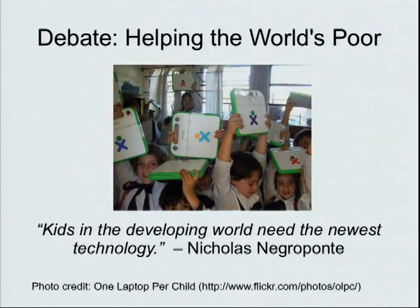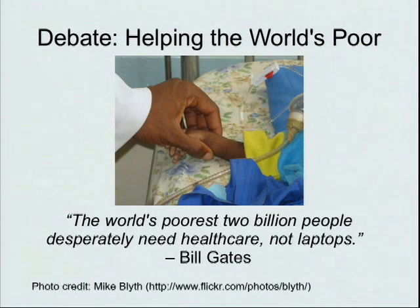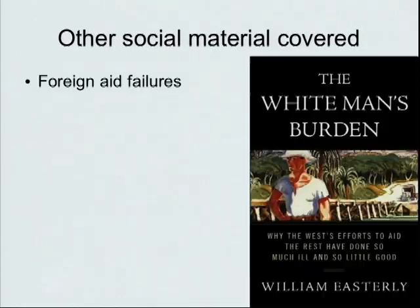The first assignment was a debate on the best way to help the world's poor. I started with two quotations: one from Nicholas Negroponte of the One Laptop Per Child project, who said kids in the developing world need the newest technology. Bill Gates responded by saying the world's poorest two billion people desperately need health care, not laptops. I continued with material on foreign aid failures, such as presented by William Easterly in the book The White Man's Burden.